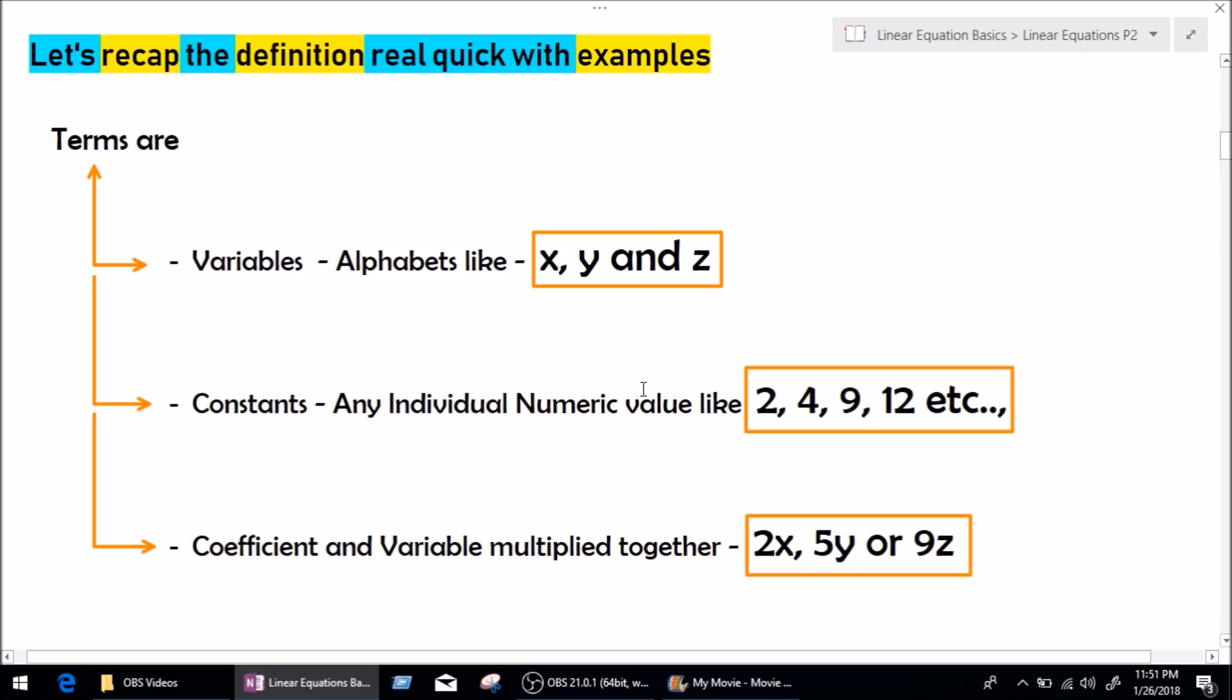Now, let's recap the definition of a term. Terms are what? Variables like x, y, z. As we learned, terms are also constants, which are independent numeric values. 2, 4, 9, 12, 18, 90, whatever. And a coefficient and variable multiplied together, which is 2x, 5y or 9z.